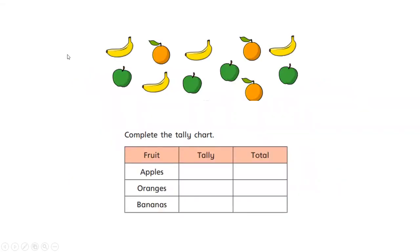The first picture we're going to look at today is this picture of some fruit. This could be some fruit we might find at school for break snack perhaps. You have a picture that looks a little bit like this on your sheet at home, but it's got some slightly different fruit on there. First of all, together we're going to complete the tally chart. I need to count how many apples, oranges, and bananas I have, drawing a tally and then the total for each row.